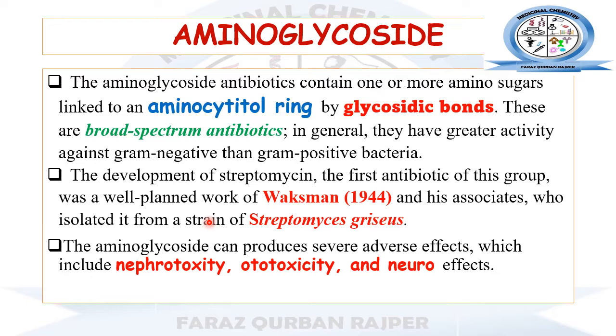The natural source for streptomycin was Streptomyces griseus. Aminoglycosides have severe adverse effects — they can produce nephrotoxicity, ototoxicity, and other neural effects.